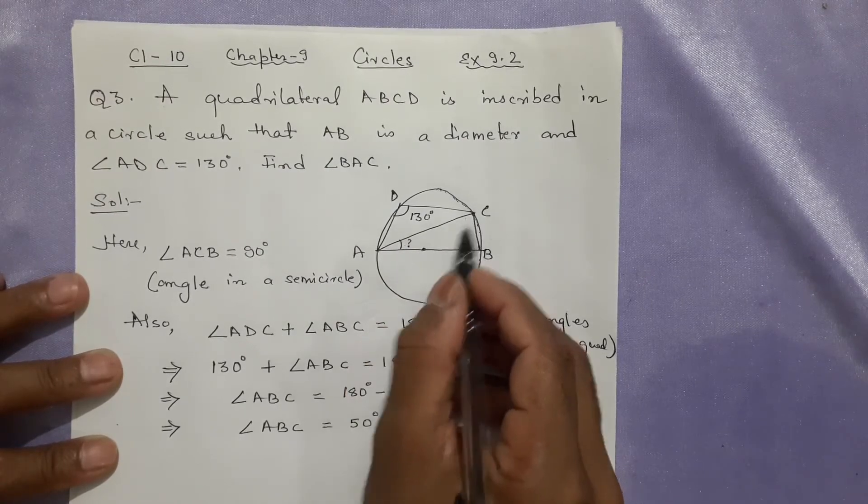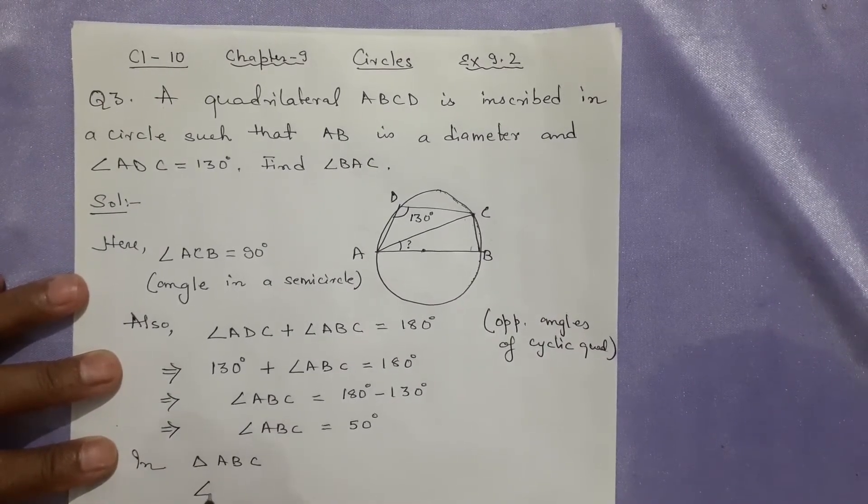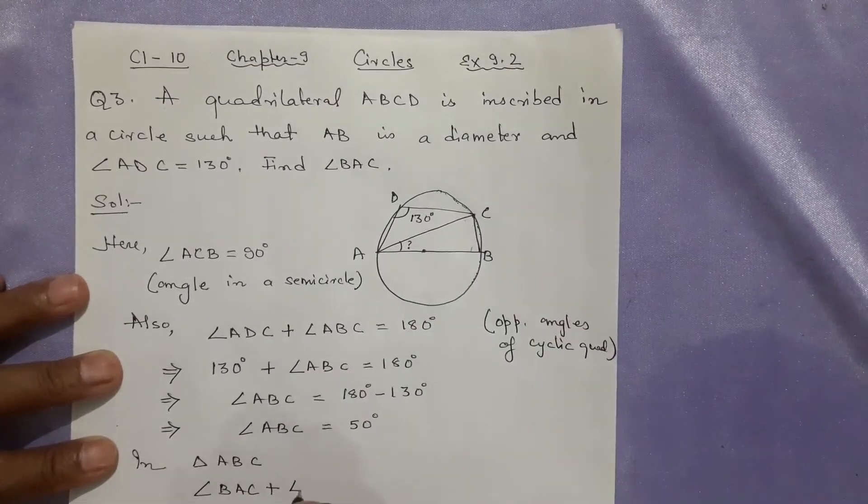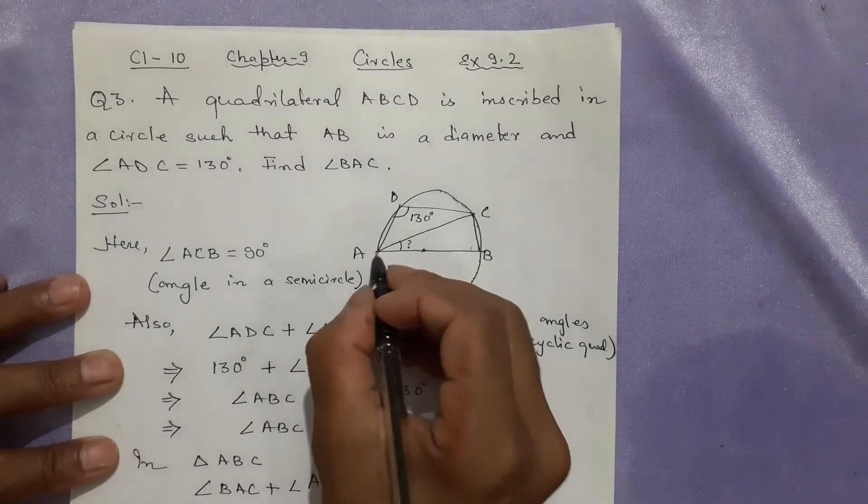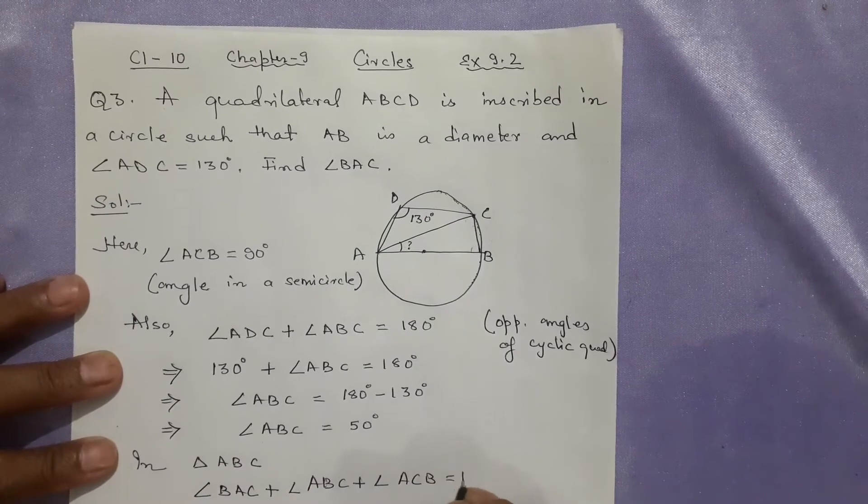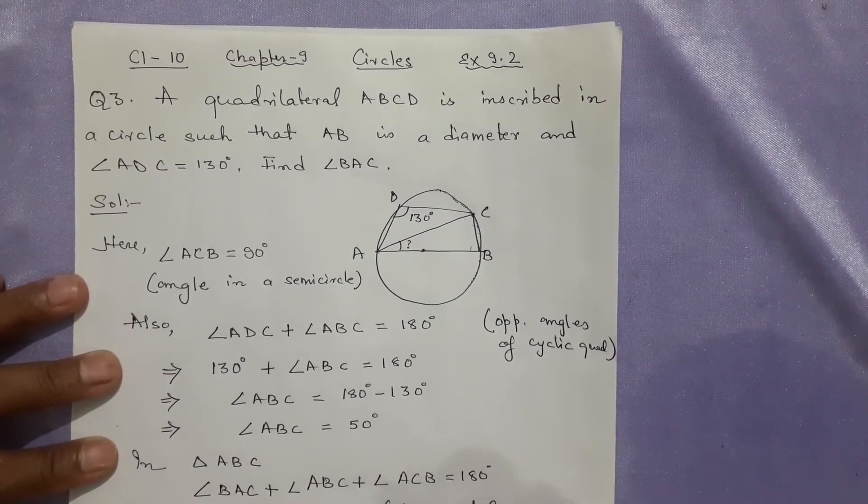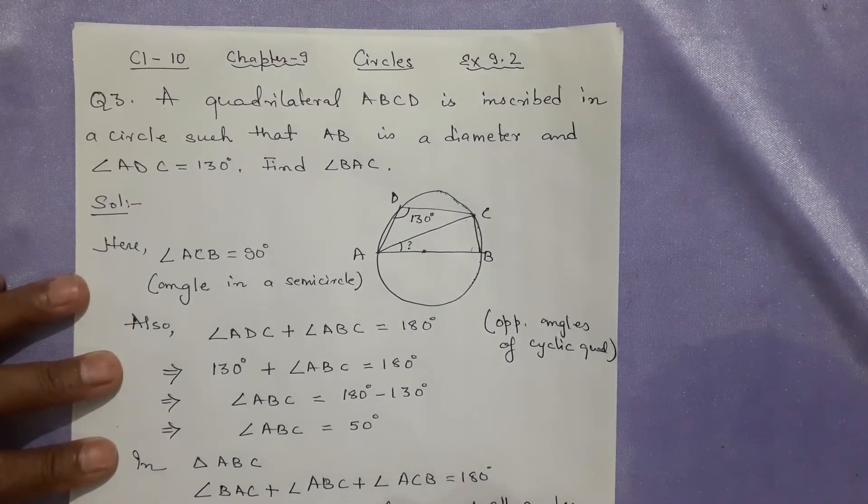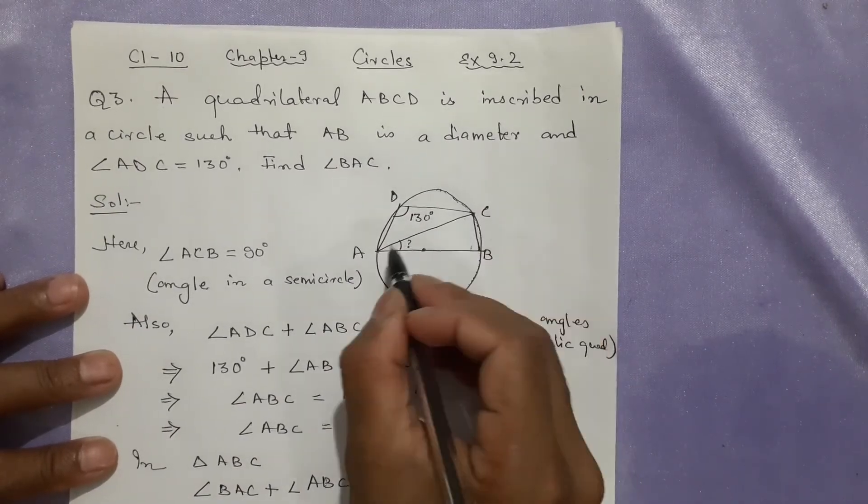So finding this angle in triangle ABC is very easy. In triangle ABC, angle BAC + angle ABC + angle ACB = 180°. What is the reason? Sum of all angles in a triangle is always 180°. ABC is a triangle, so the three angles add to 180°.